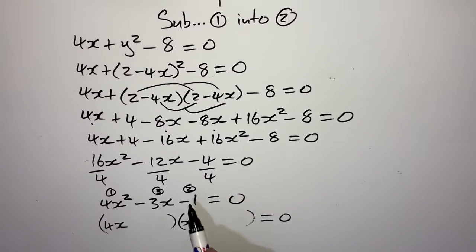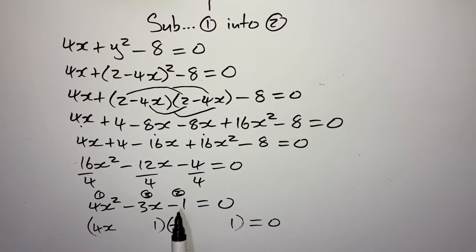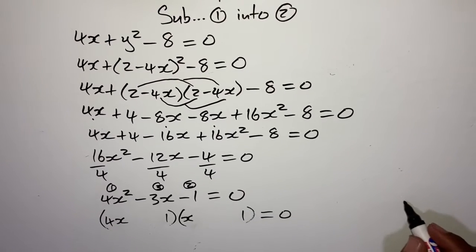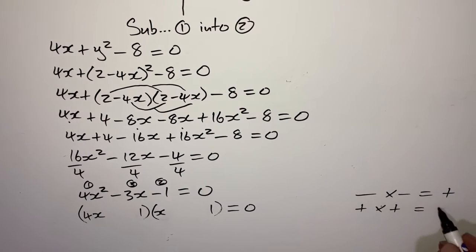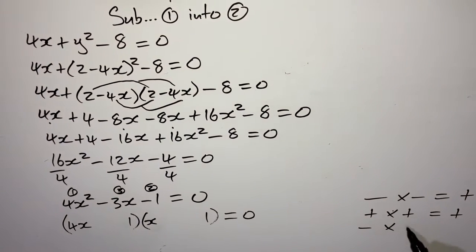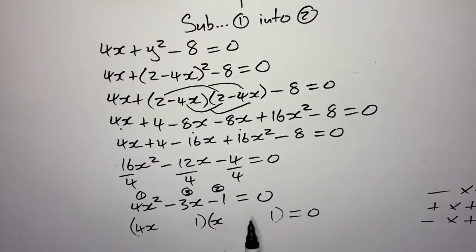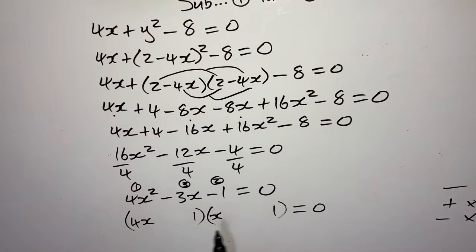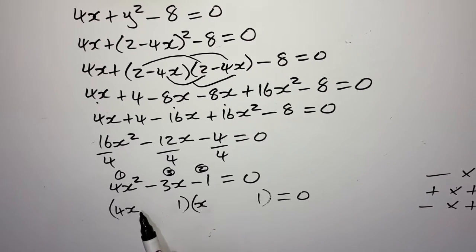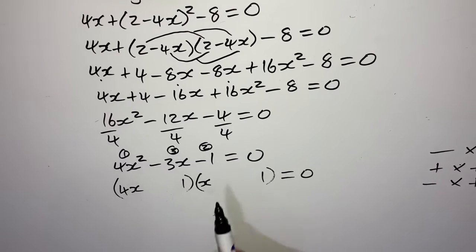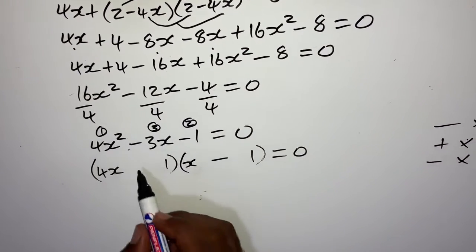The middle term has a negative sign. So I'll put the negative on the bigger bracket side, and the other sign will be positive. Placing your factors: (4x + 1)(x - 1) = 0. From the first bracket: 4x + 1 = 0, take 1 to the other side, giving 4x = -1, divide both sides by 4, so x = negative 1 over 4. From the second bracket: x - 1 = 0, so x = 1.